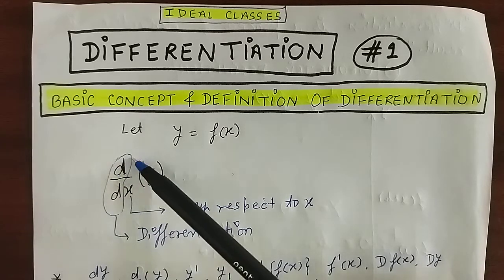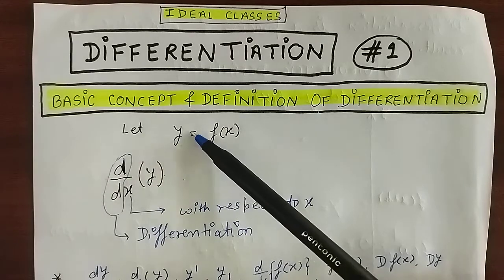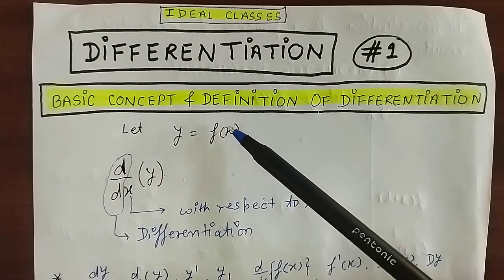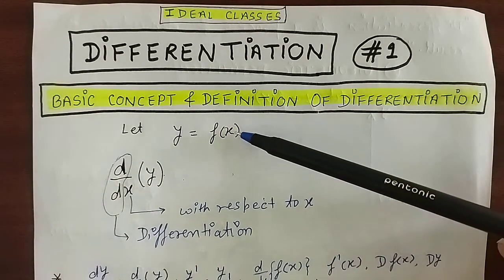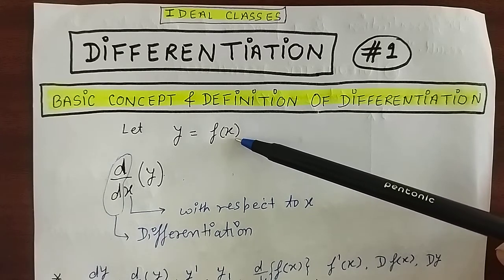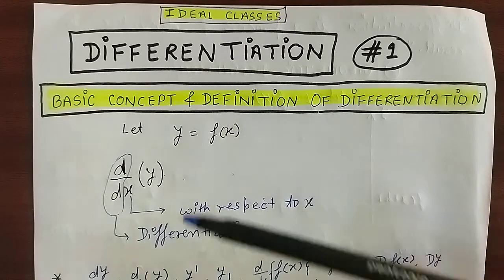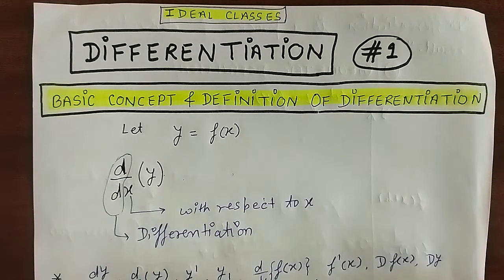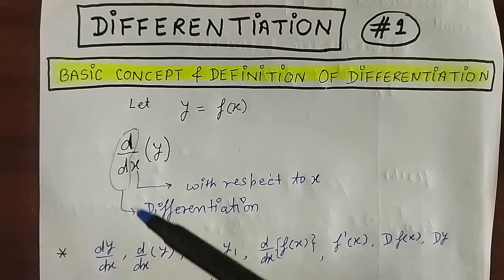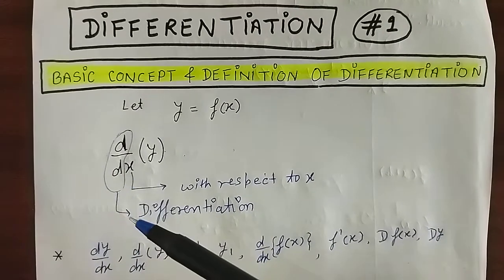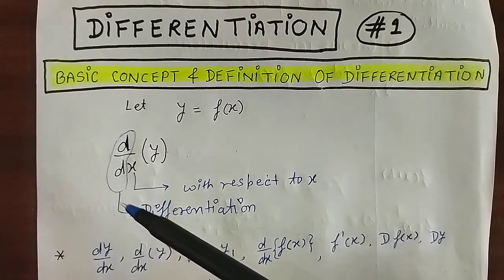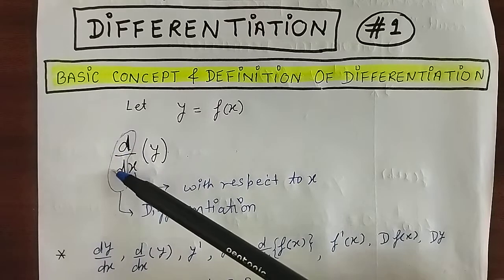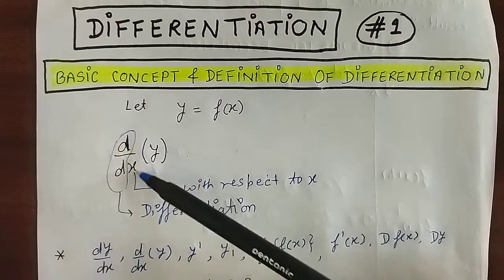Let y equal to f of x be a function of x, where x is an independent variable and y is a dependent variable. The notation of differentiation is d upon dx of y.